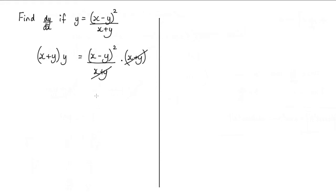Now we can go ahead and expand brackets. So expanding here we'd have xy plus y squared. Expanding this set of brackets here would give us x squared minus 2xy plus y squared.